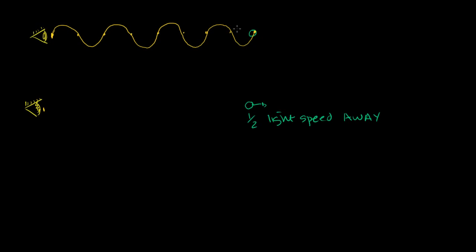Let's think about what the waveform would look like. By the time the light reached my eye — let me redraw this eyeball — they both started emitting light at the exact same time, but this moving source has traveled half the distance in that same amount of time. So by the time the light reaches my eye, this source will have traveled about half that distance. That very first photon, if you view light as a particle, will reach my eye at the very same time as the very first photon from the stationary source. So the waveform is going to essentially be stretched — we're still going to have four full wavelengths, but they'll now be stretched.